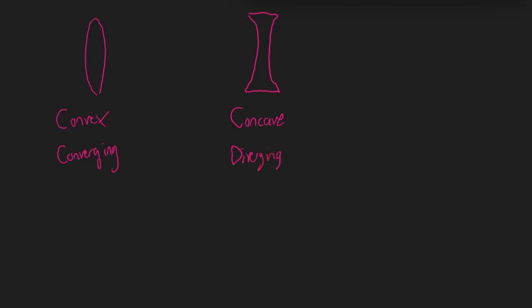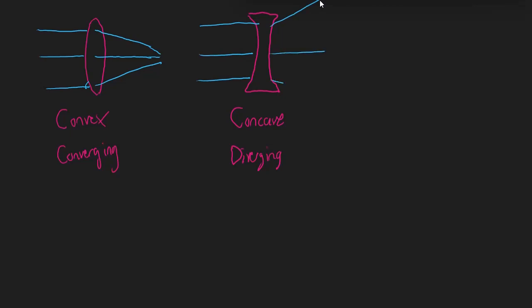The reason why lenses work to bend light is the same principle we talked about in our video on refraction — when light hits the lens at an angle relative to the surface, the light gets refracted. With a convex lens, we call it converging because the light rays get converged, brought closer together. With a concave lens, it's diverging because the light rays are spread outward.